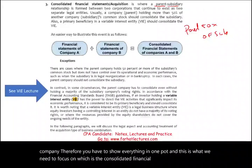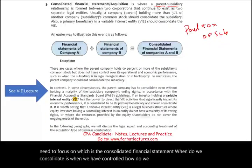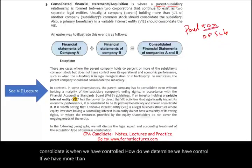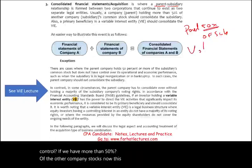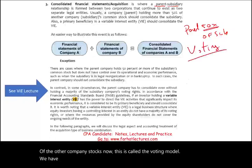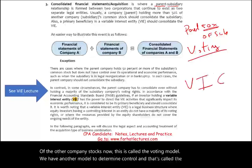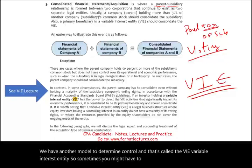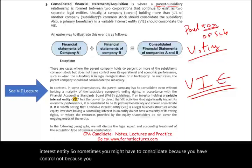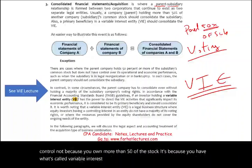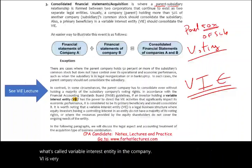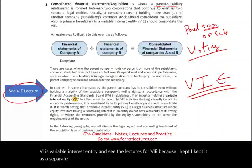When do we consolidate? When we have control. How do we determine control? If we own more than 50% of the other company's stock — this is called the voting model. However, there is another model to determine control called the VIE, or variable interest entity. Sometimes you may have to consolidate not because you own more than 50% of the stock, but because you have a variable interest entity in the company. See the separate VIE lecture for more detail.